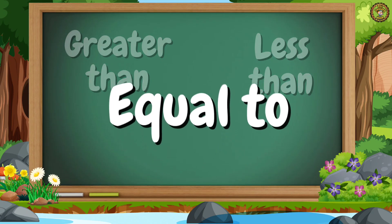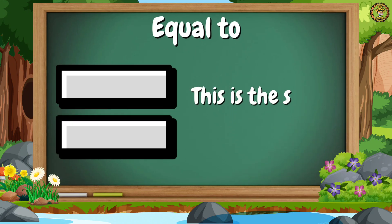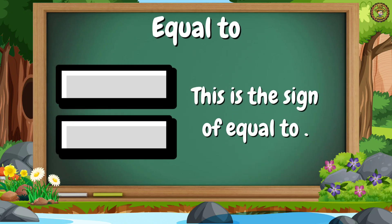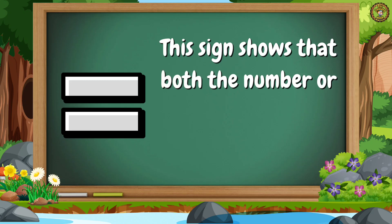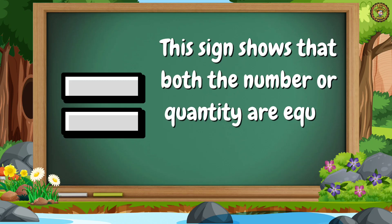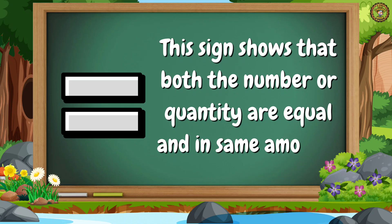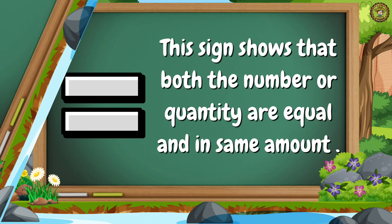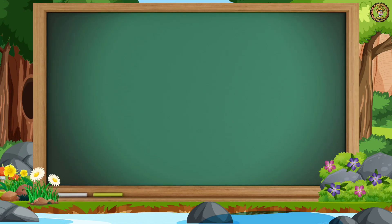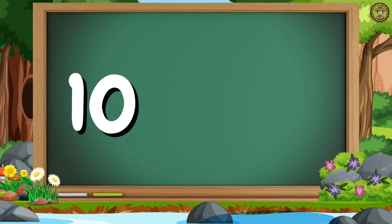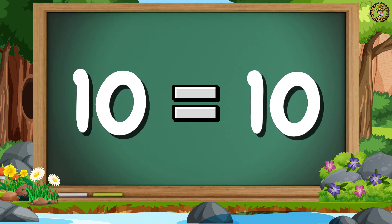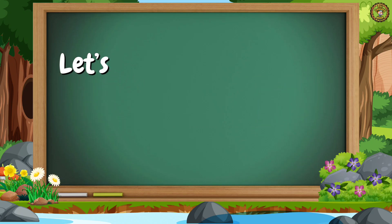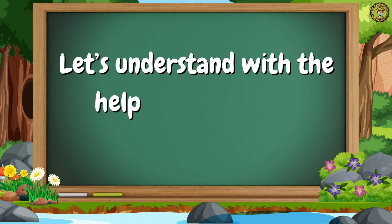Now, let's learn about equal to. This is the sign of equal to. This sign shows that both the numbers or quantities are equal and in the same amount. Let's take one example with two numbers: 10 and 10. We use the sign of equal to because both numbers are equal.